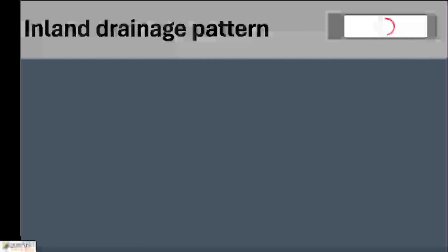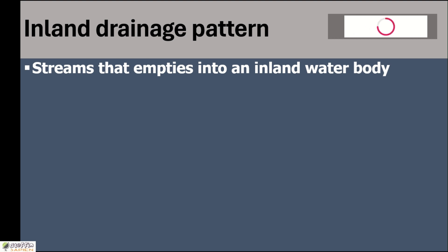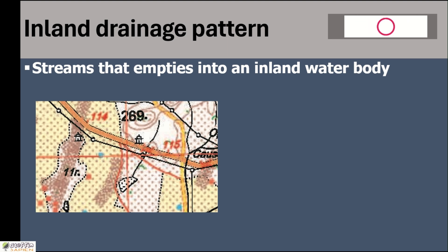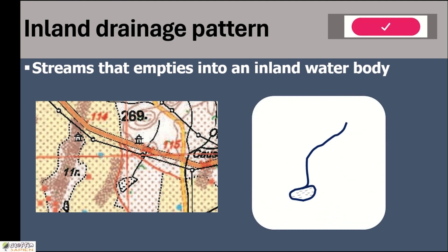The final type is inland drainage pattern. Streams that empty into an inland water body are called inland drainage pattern. There are a few rivers in our study area which originate from a hill area and after flowing a few kilometers end in another water body like a lake. The drawing shows a normal line for the river, and finally they end into a water body like a lake.